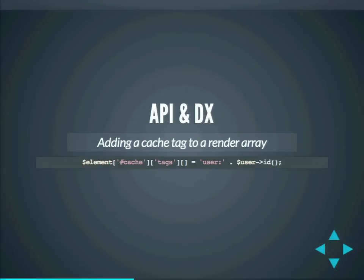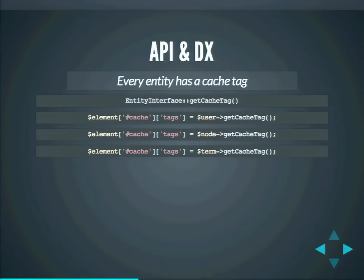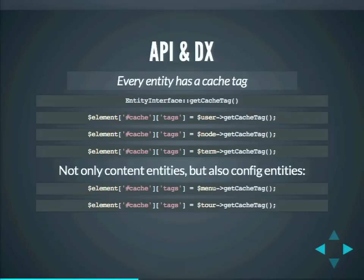A cache tag is a string, and adding a cache tag to a render array is as simple as accessing #cache, which already existed in Drupal 7. There is a new key now called 'tags,' and you just append a string to that. Because every single entity in Drupal 8 has cache tags already, and it can be painful to construct the string over and over, we provided a getCacheTag method on the entity interface. Every single entity — content entities like users, nodes, and terms, but also config entities like menus, tours, or blocks — all have a getCacheTag method. As soon as you have an entity, just call getCacheTag on it and you have the cache tags associated with it.